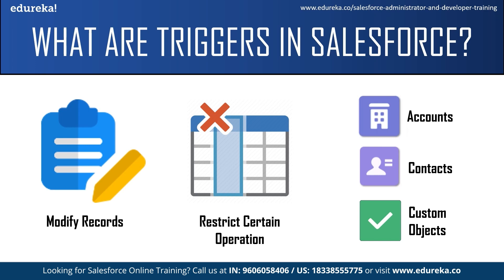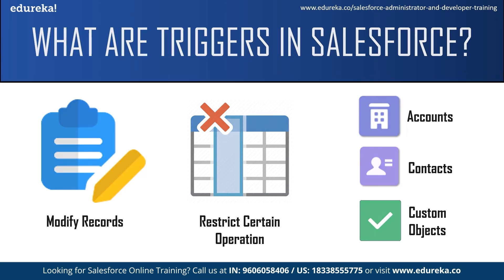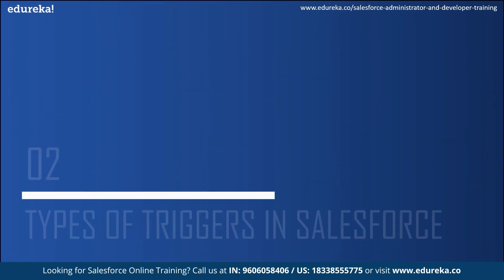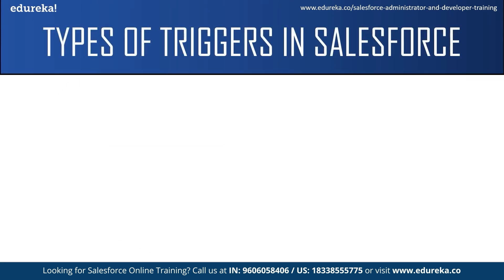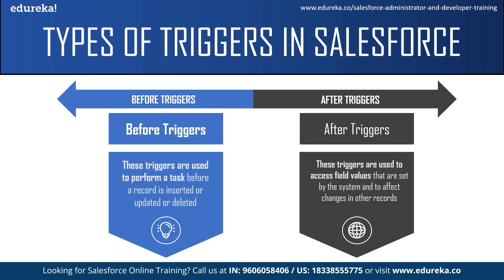Now let us move on to the types of Salesforce triggers. Basically there are two types: the before trigger and the after trigger. As the name suggests, before triggers are used to perform a task before a record is inserted, updated, or deleted. These triggers are usually used to update or validate record values before they are saved to the database.